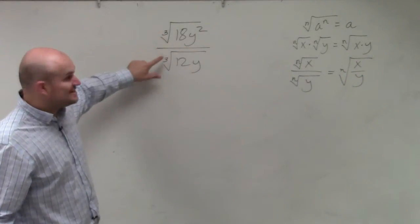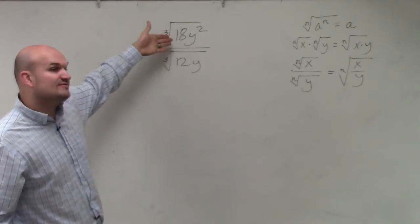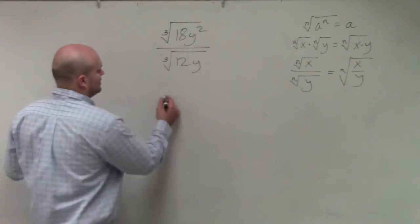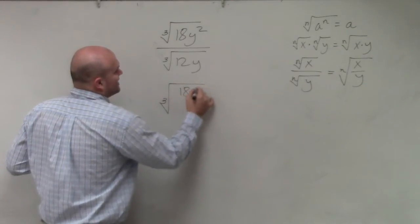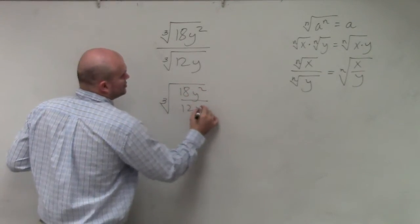So as long as my indexes are the same, I can simply just divide these under the same radical. So therefore, I could rewrite this as the cube root of 18y squared over 12y.